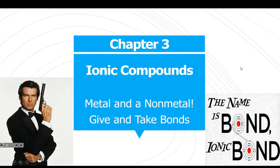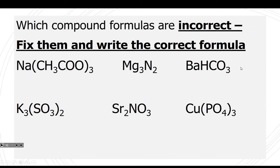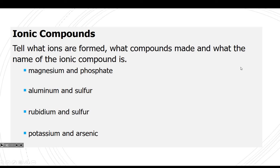Next is Chapter 3 — all about bonding. Metal and a nonmetal, it's a give-and-take bond. One will give an electron, one takes an electron. One becomes positive, one becomes negative. You need to be able to look at two elements, predict their charges, and put them together correctly.